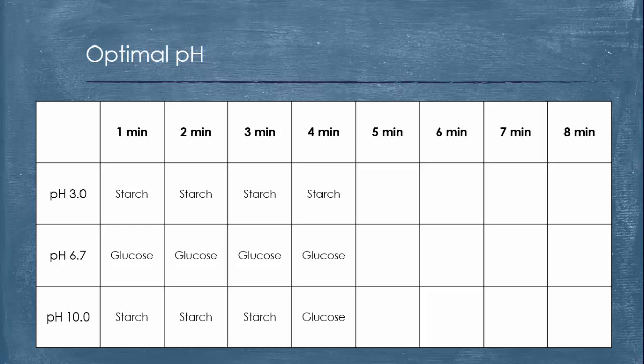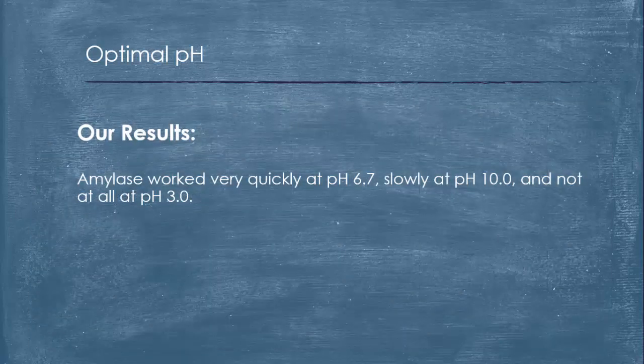After the second or third minute, but at the fourth minute, which we should have seen, is the basic pH amylase starts to work, so we start to see glucose. Then again, even after eight minutes you'll see the acidic pH of 3.0, still starch had not been broken down. Thus, amylase wasn't working at the pH 3.0.